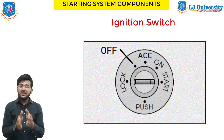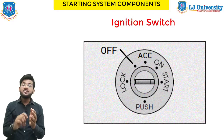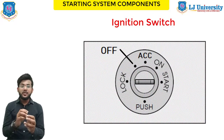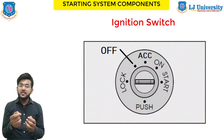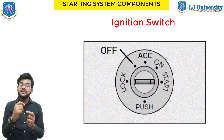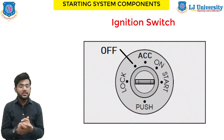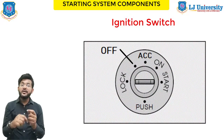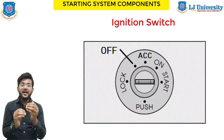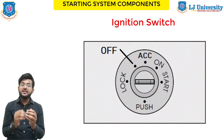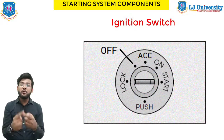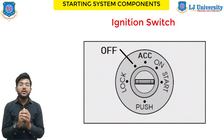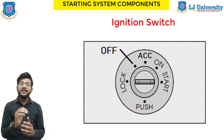Most ignition switches are mounted on the steering column. Some switches have two separate parts: the lock cylinder into which you insert the key, which also contains the mechanism to lock the steering wheel and shifter, and the switch itself which contains the actual electrical circuits. It is usually mounted on top of the steering column just behind the dashboard and connected to the lock by a linkage or rod.